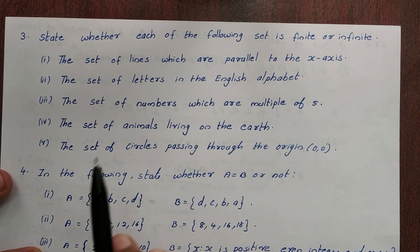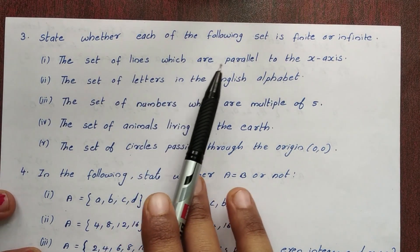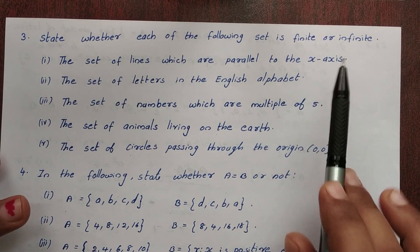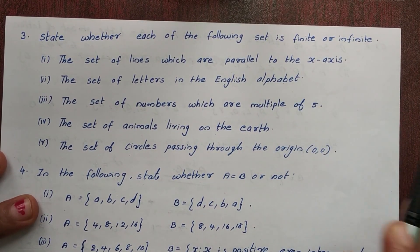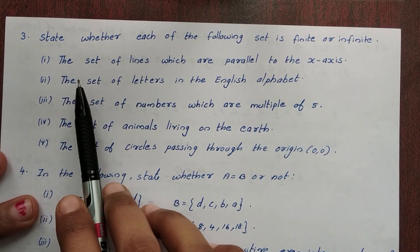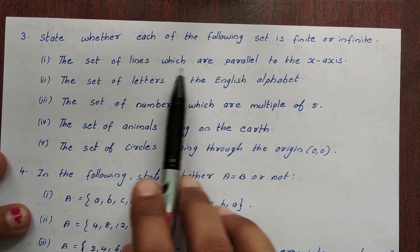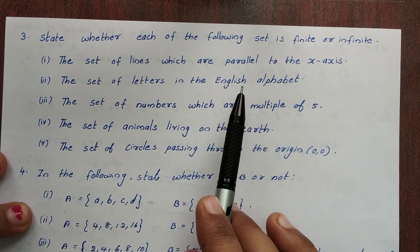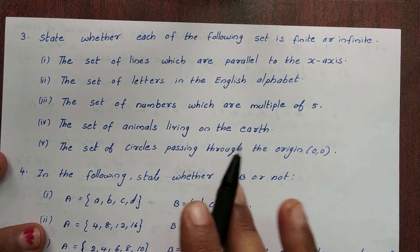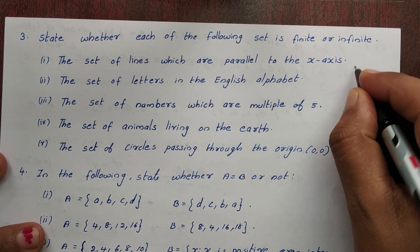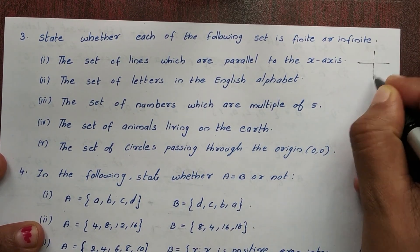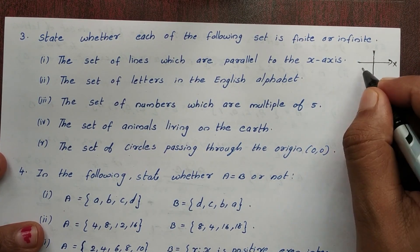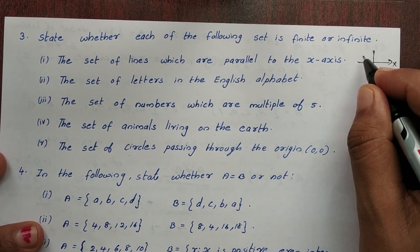Third question: state whether each of the following sets is finite or infinite. The set of lines which are parallel to the x-axis. This is the x-axis, and there are infinitely many lines parallel to it.